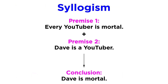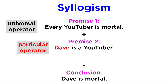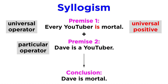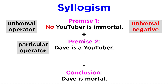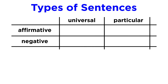We can see in all of these examples two kinds of sentences, depending on their operators. There are universal ones, such as 'every YouTuber is mortal,' which refer to every member of a given category being part of some other category, and particular ones, such as 'Dave is a YouTuber,' which refers to a single or limited number of members belonging to a given category. Both these kinds of sentences can be either positive — affirming something — or negative, meaning they are denying it. 'No YouTuber is immortal,' for example, would be a universal negative. This leads us to all four kinds of sentences in Aristotelian logic, which we can categorize by a letter: A for universal affirmatives, E for universal negatives, I for particular affirmatives, and O for particular negatives.